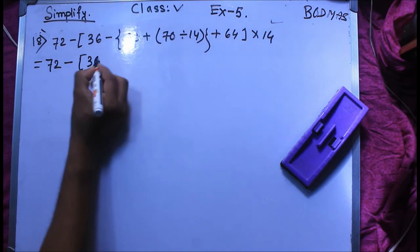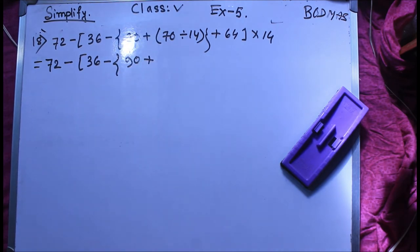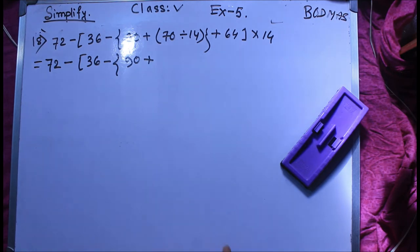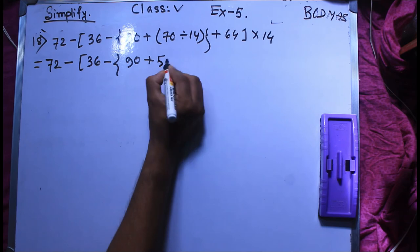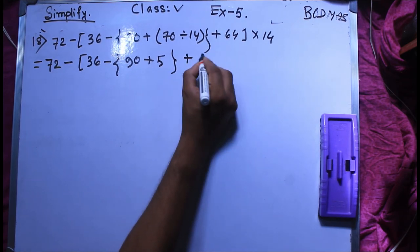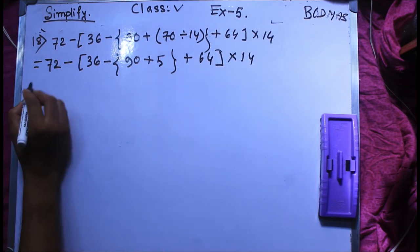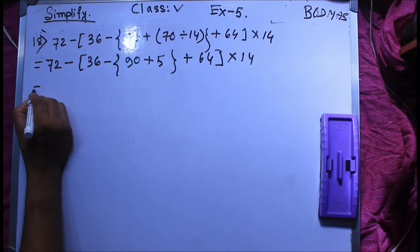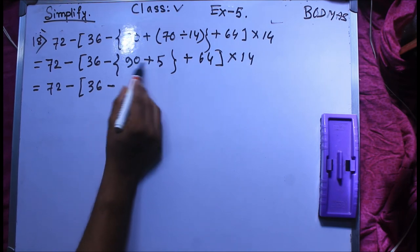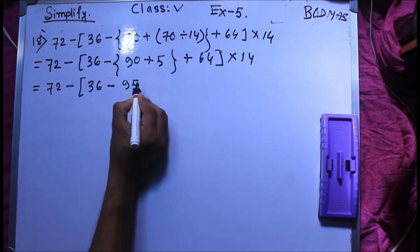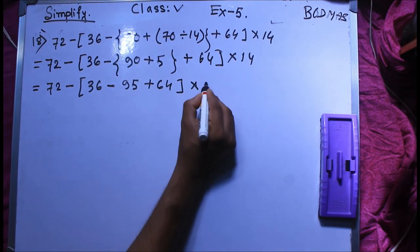First bracket of 36 minus second bracket 90 plus, here we are 70, 40 we divide, so 5. First bracket is 5 plus 64, third bracket multiple by 40. So we have second bracket 72 minus 36 minus 90 plus 5, which is 95. Second bracket 6 plus 64, third bracket multiple by 14.